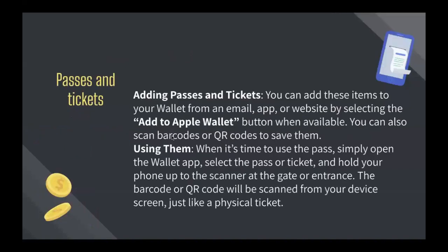For passes and tickets, you can add these items to your wallet from an email, app, or website by selecting the 'Add to Apple Wallet' button when available. You can also scan barcodes or QR codes to save them. When it's time to use the pass, simply open the wallet app, select the pass or ticket, and hold your phone up to the scanner at the gate or entrance. The barcode or QR code will be scanned from your device screen just like a physical ticket.